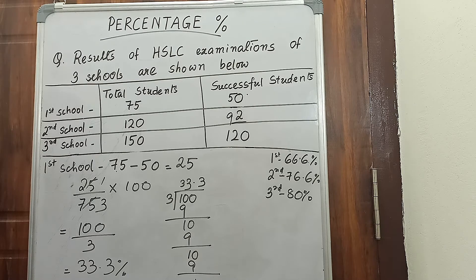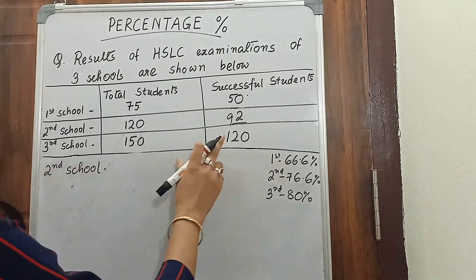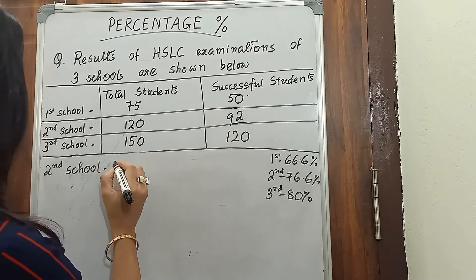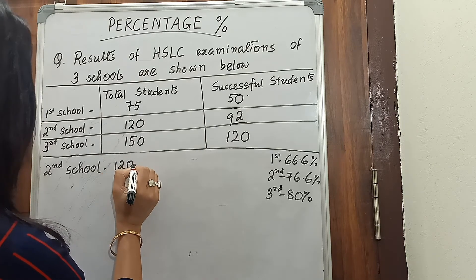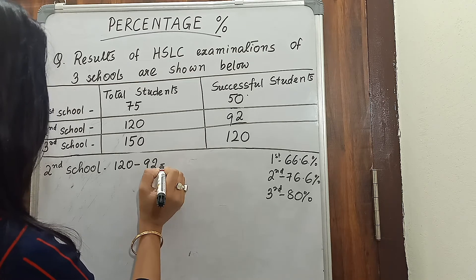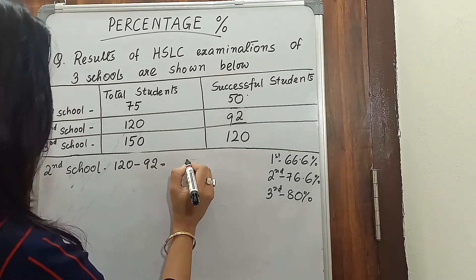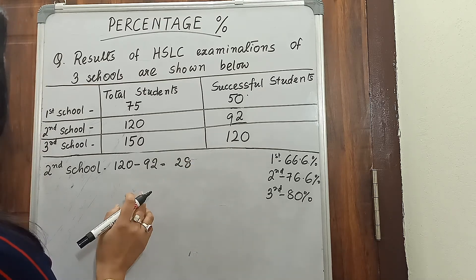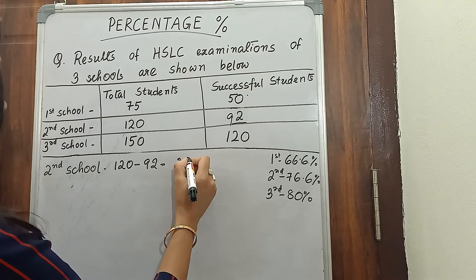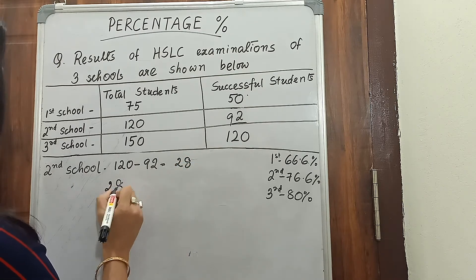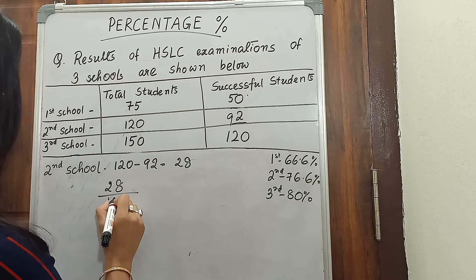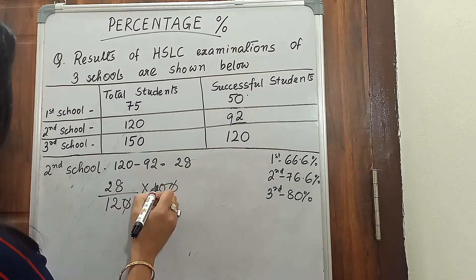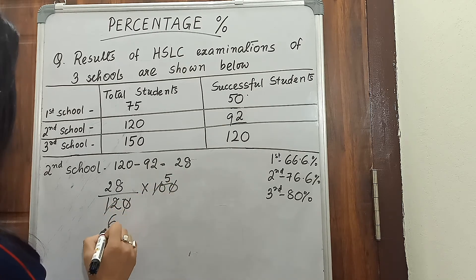In the same way we will find out for the second school. In the second school, 92 students passed out of 120, so the remaining students have not passed the examination. Total students 120 minus passed students 92 equals 28. So we will find out the percentage of 28: 28 divided by the total number of students, into 100.